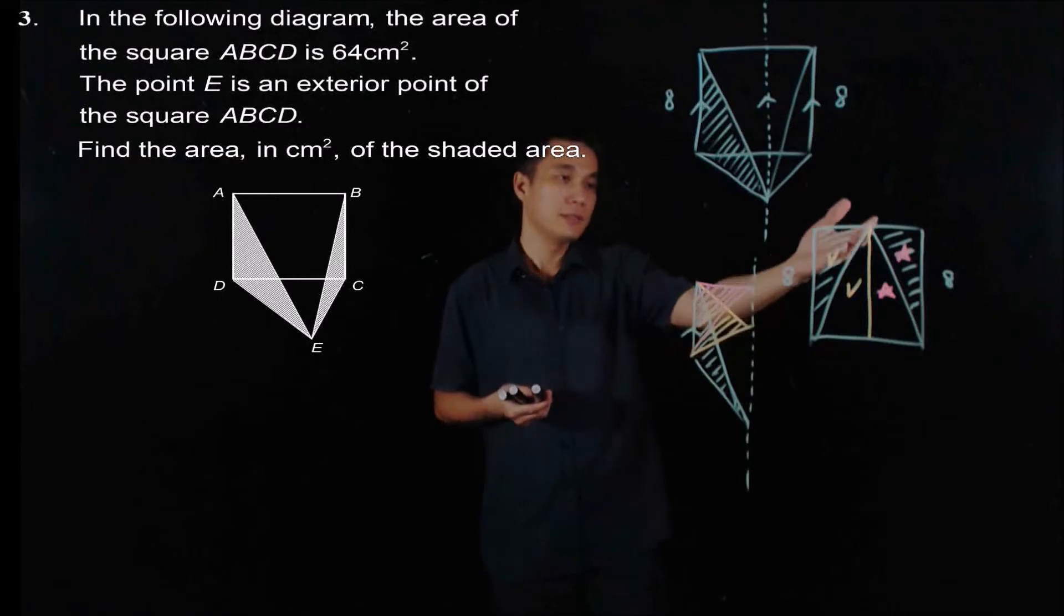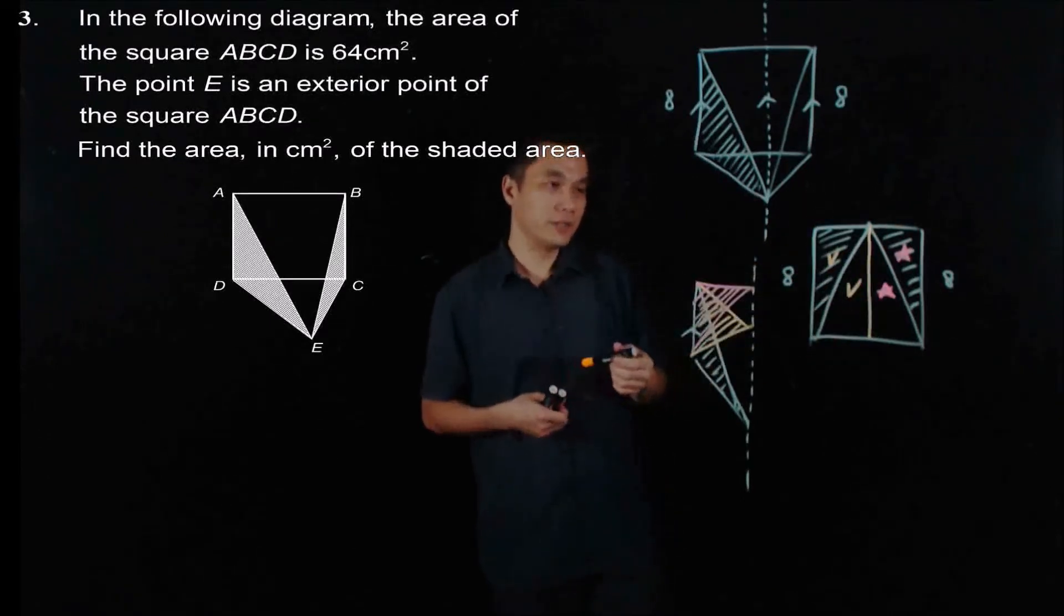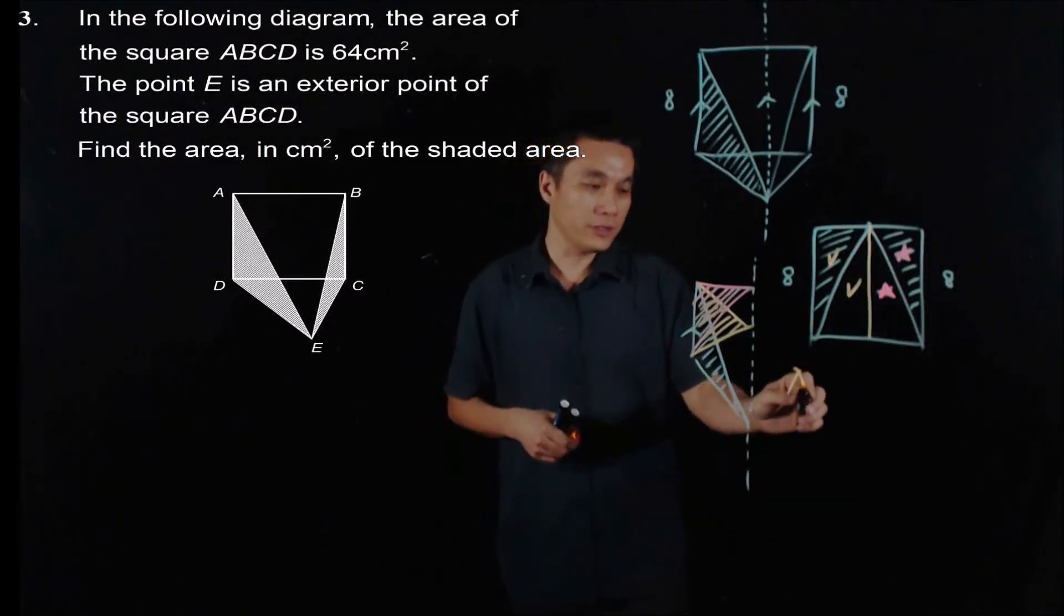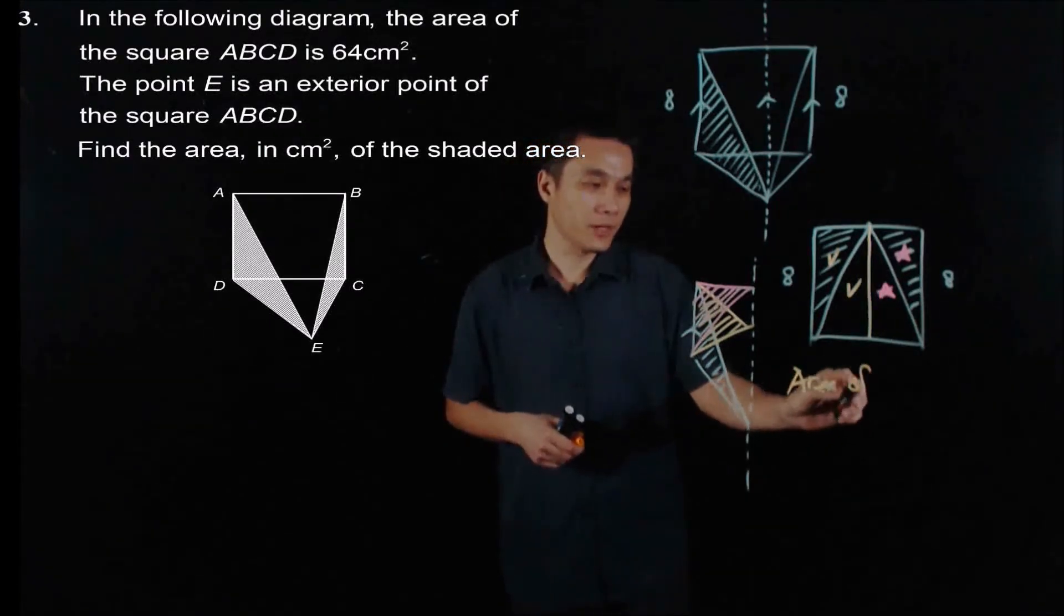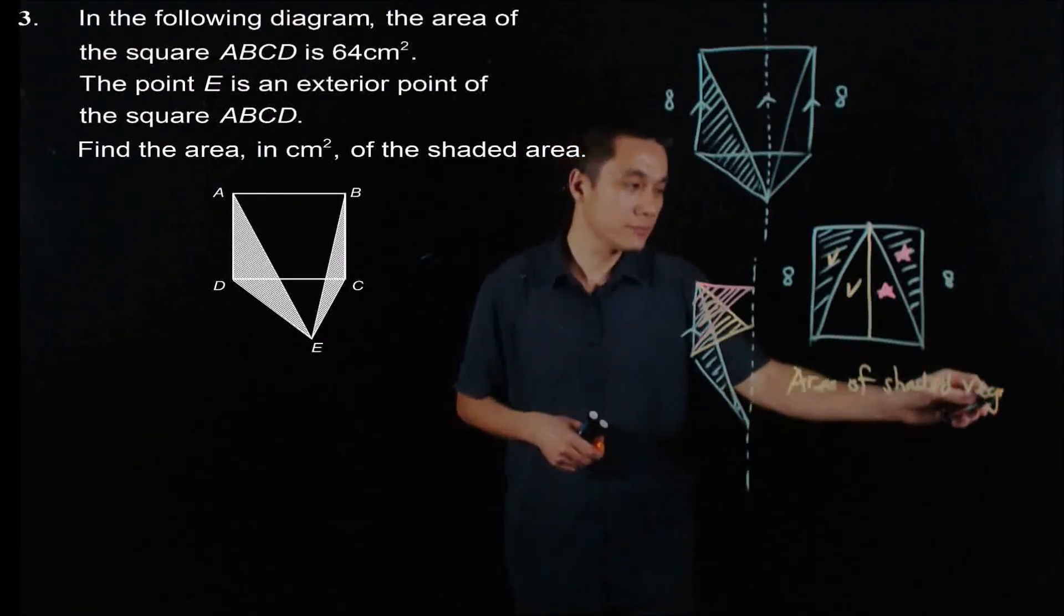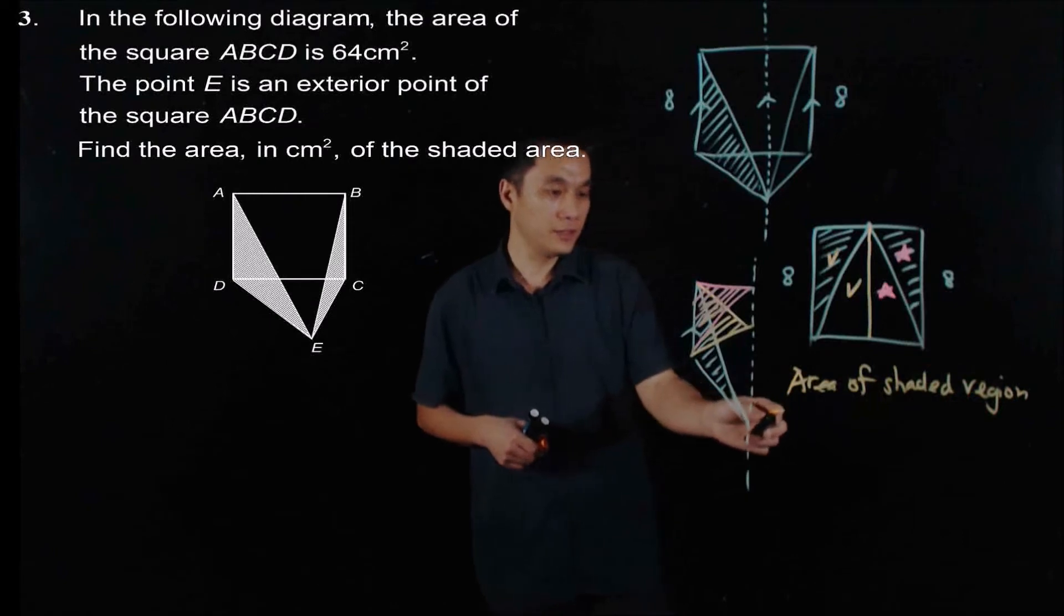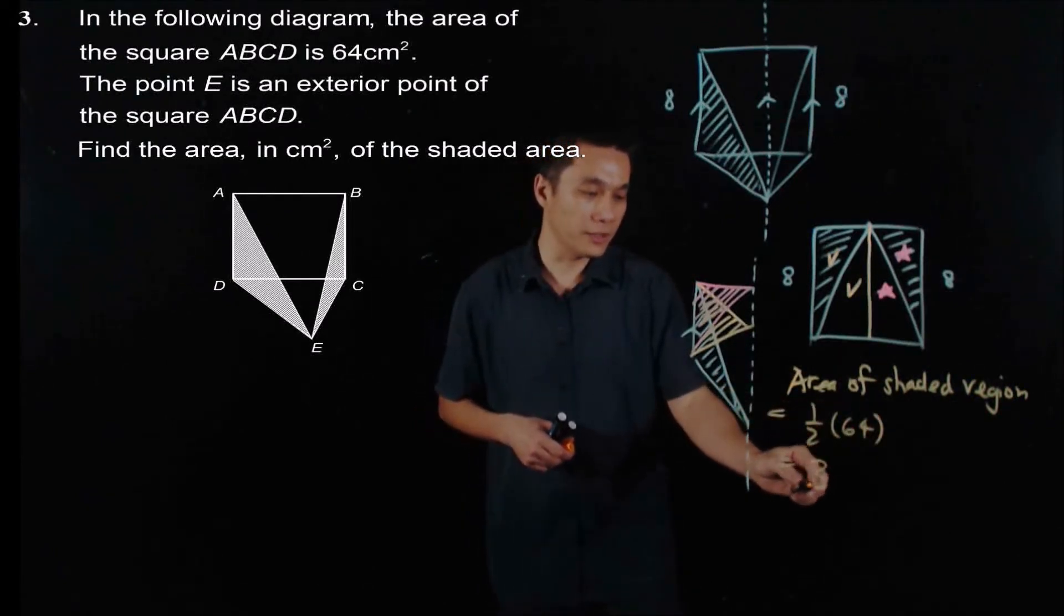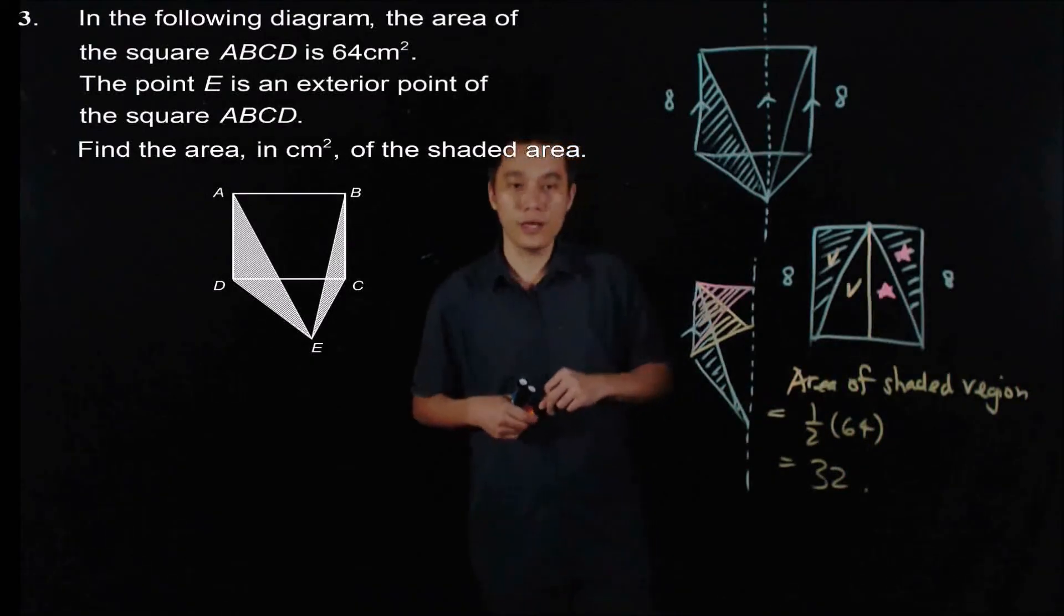And we know that the whole square is of area 64 according to the question. It means that the area of the shaded region will be half of the area of square. It means that the area of shaded region is equal to half of the area of the square. Meaning that this is 32. And we are done.